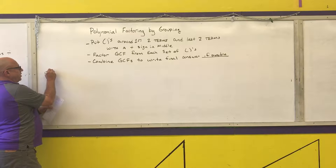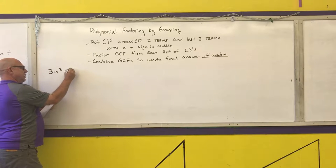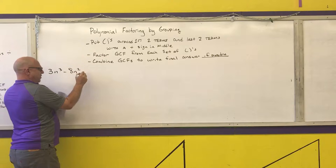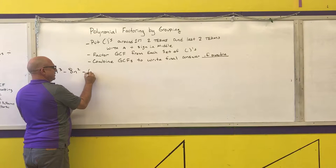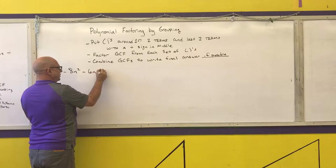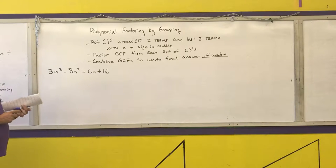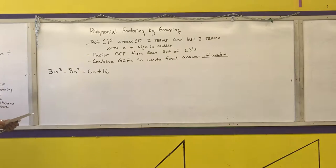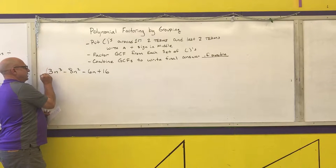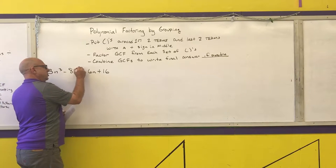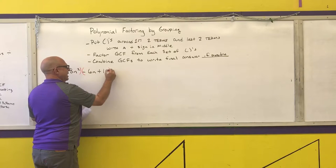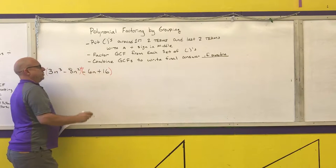First example: 3n cubed minus 8n squared minus 6n plus 16. Step one says to put parentheses around the first two terms, parentheses around the last two terms, with a plus sign in the middle.